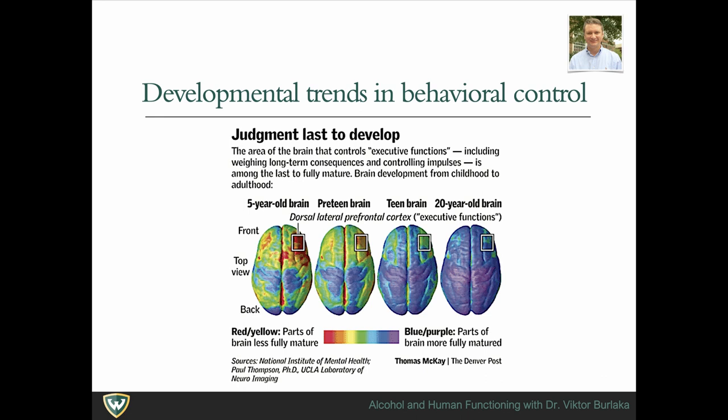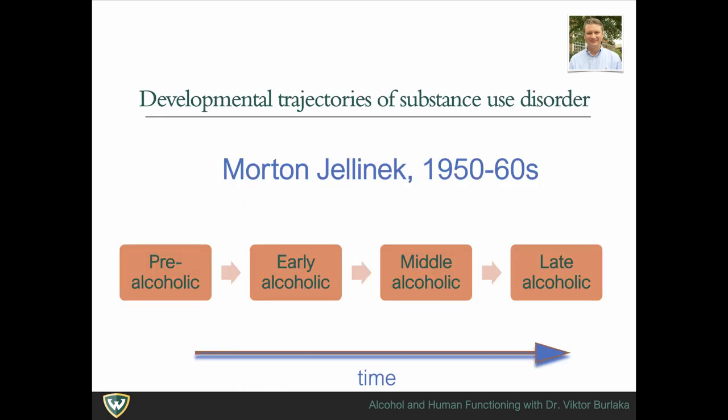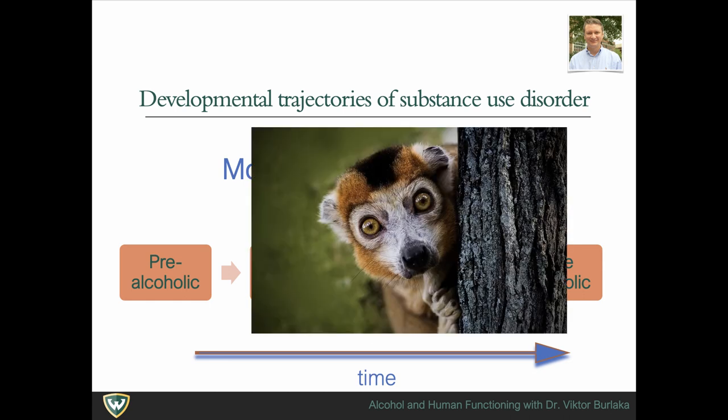During the 1950s and 1960s, Morton Jelinek suggested that alcoholism follows a natural course characterized by four distinct stages: pre-alcoholic, early alcoholic, middle alcoholic, and late alcoholic.